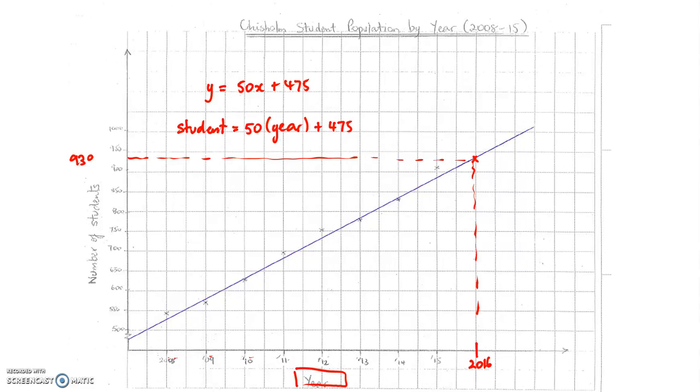But we can also make a prediction based on substitution of numbers. So here for example, if we wanted to work out what the value was in 2016, which is 9 years on from 2008. If we count 2008 as our first year.